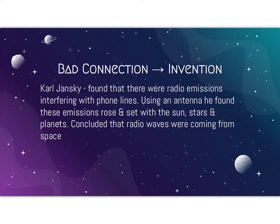How were they discovered? Karl Jansky found that there were radio emissions that were interfering with phone lines. Using an antenna, he found that these emissions rose and set with the sun, with the stars, and different planets. He concluded that radio waves were coming from space and interfering with the phone lines that were using radio signals.